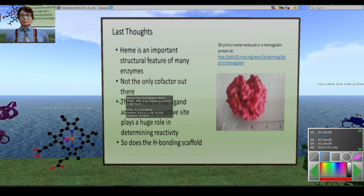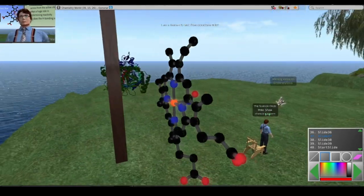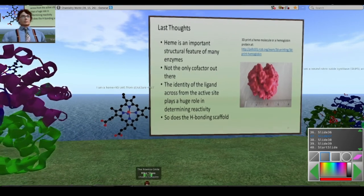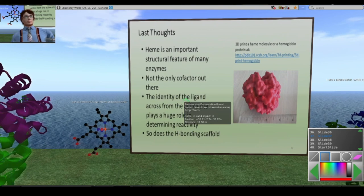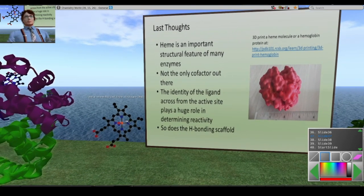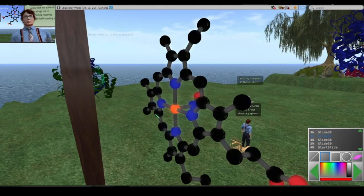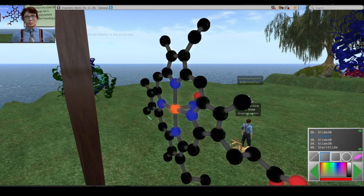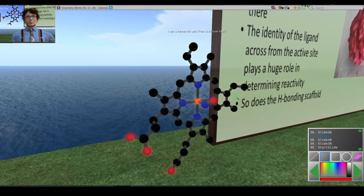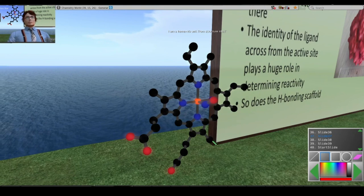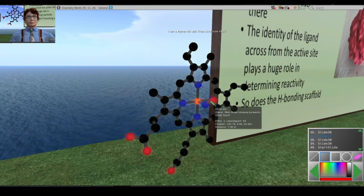Some last thoughts. Heme's really important. It's not the only cofactor that you find in the body, but it's an important one. It has a lot of different functions in enzymes. Essentially it's got a lot of flexibility for such a molecule. What's in this site number six, as I'll call it, the proximal site, plays a huge role. What the hydrogen bonding network does in the distal site as well as the proximal site plays a huge role in determining its chemistry. This site here would allow you to do a 3D print of a heme molecule or a hemoglobin protein. It's basically the files you would need if you had a printer. You could make yourself a little blob of hemoglobin.